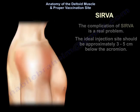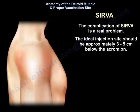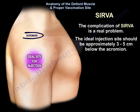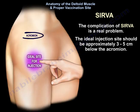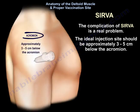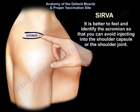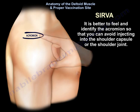SIRVA is a real problem. The ideal injection site should be approximately 3 to 5 cm below the acromion. It is better to feel and identify the acromion so you can avoid injecting into the shoulder capsule or shoulder joint.